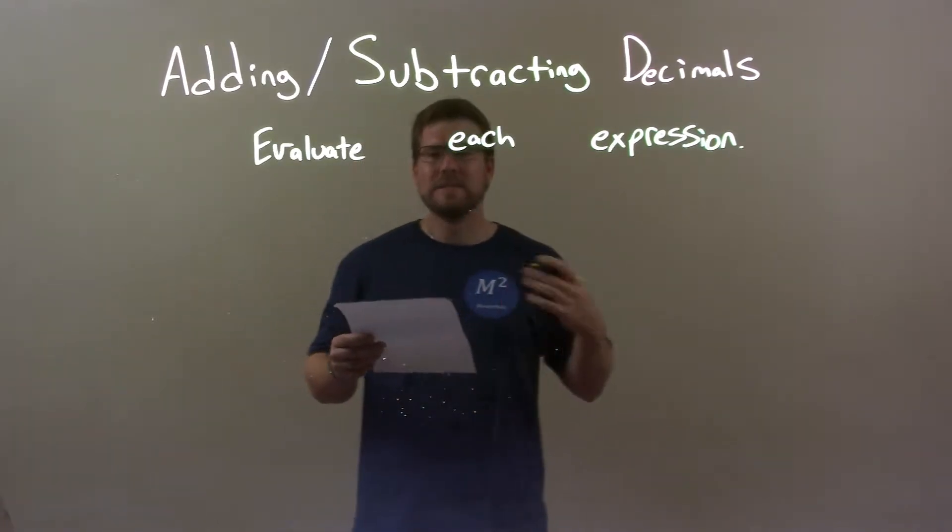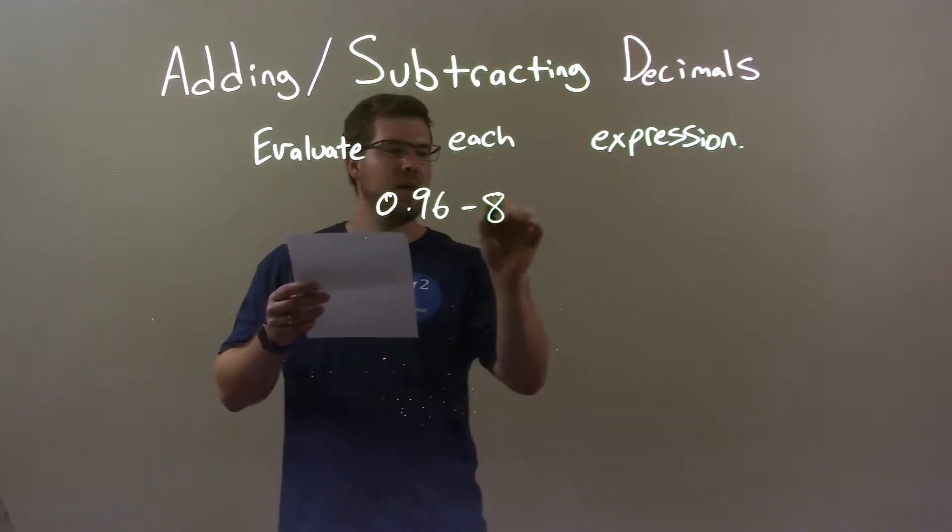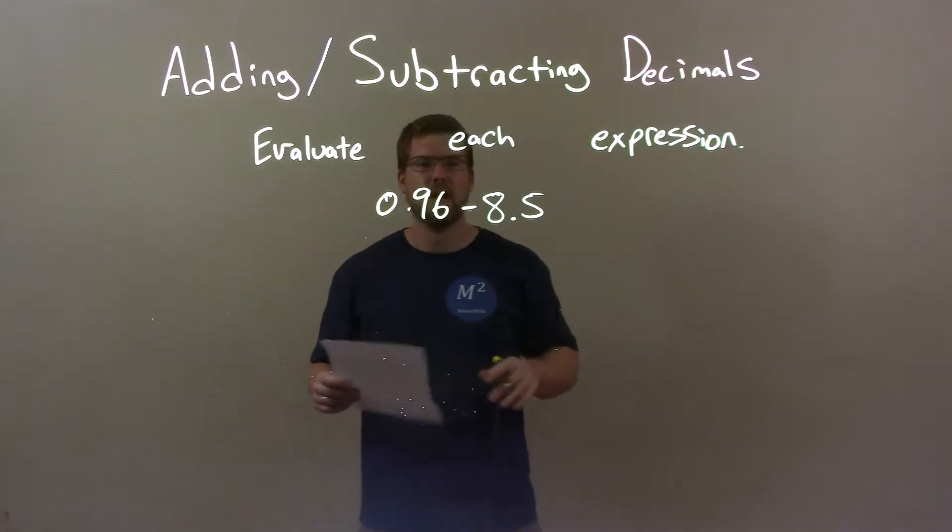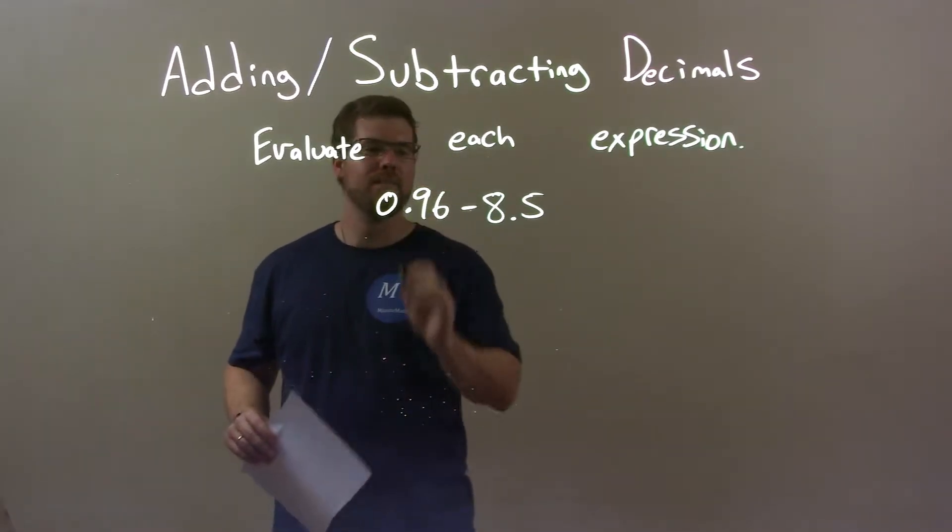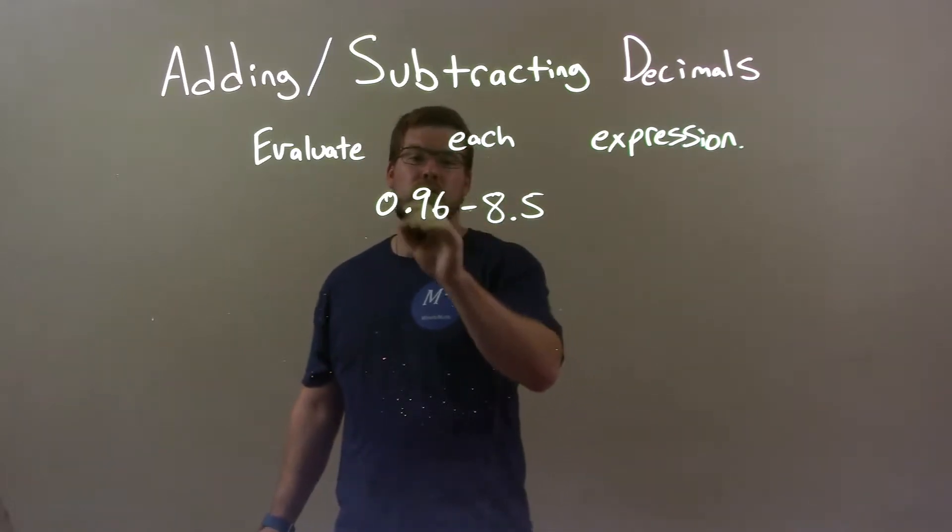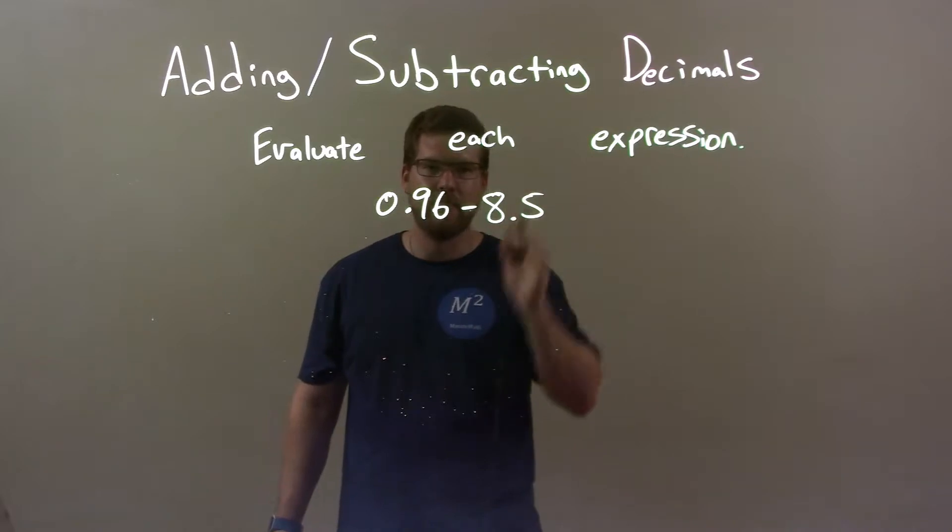If I was given these decimals, 0.96 minus 8.5, well I know that 8.5 is larger than 0.96. That's going to make my final answer negative. I need to keep that in mind.